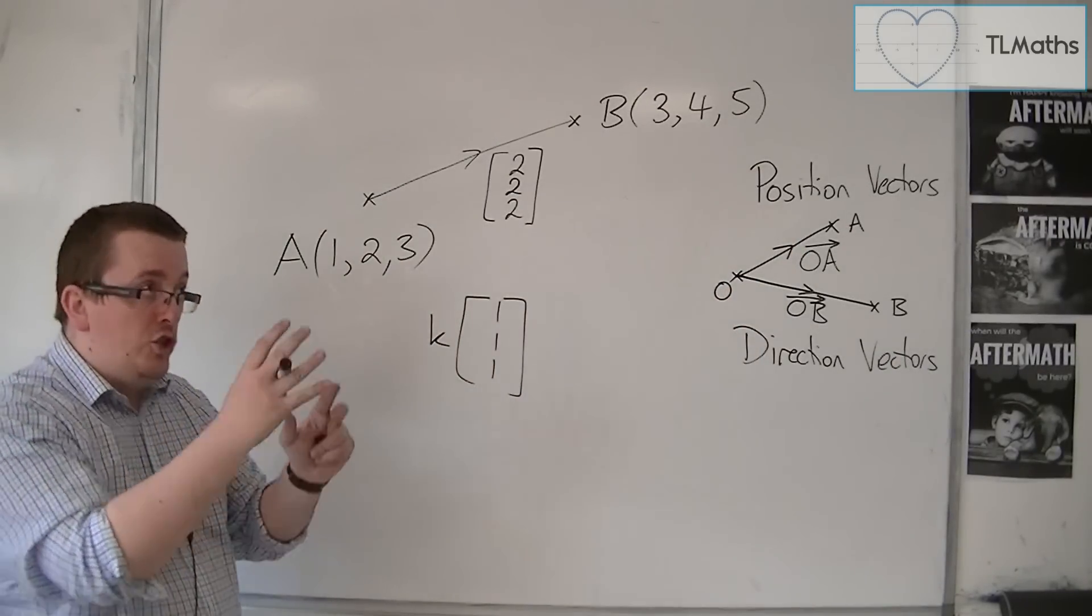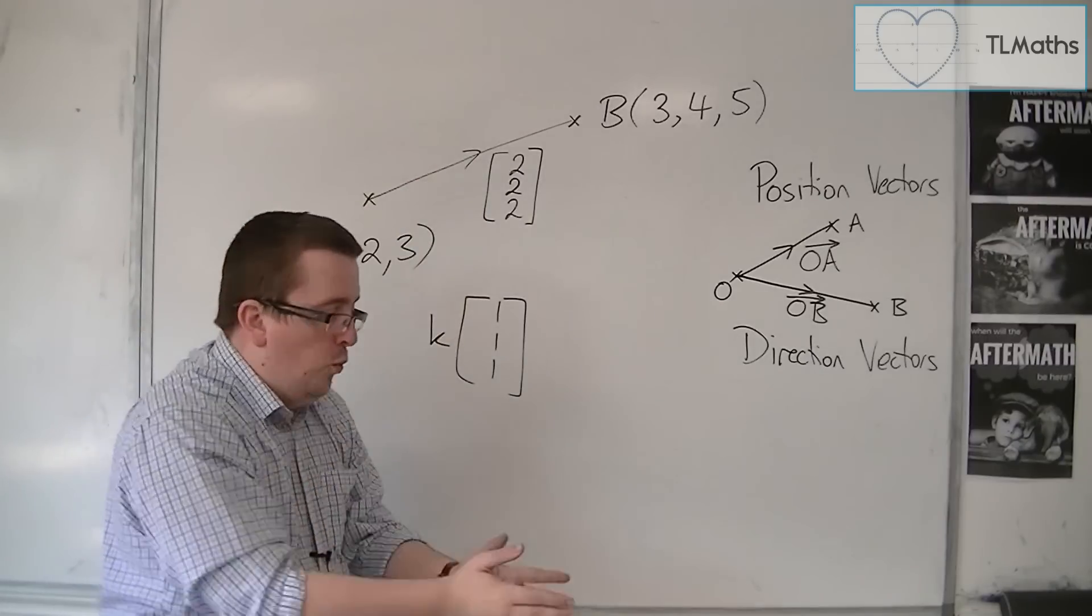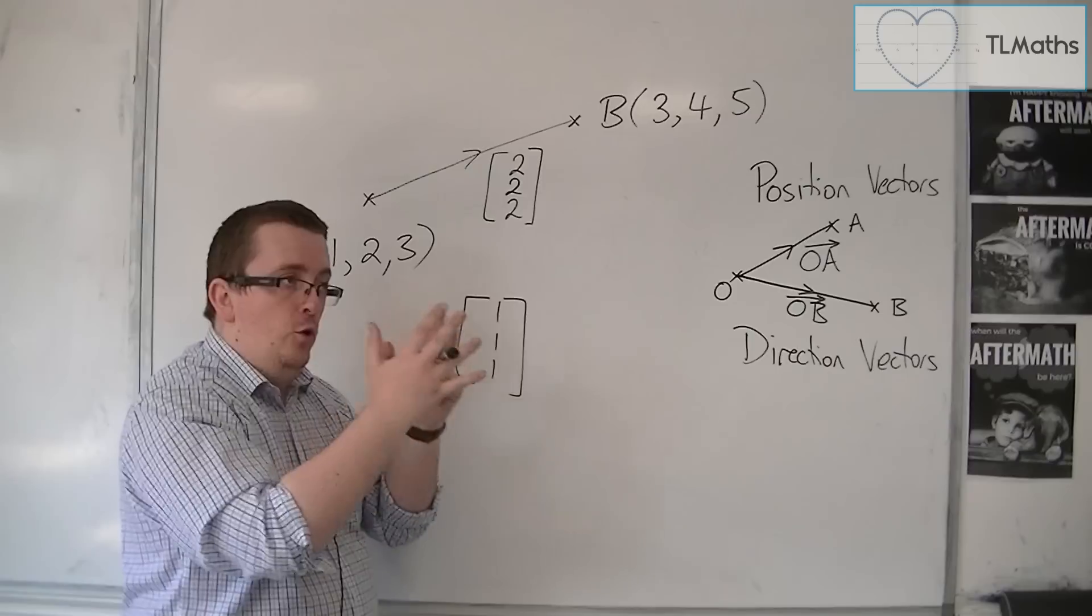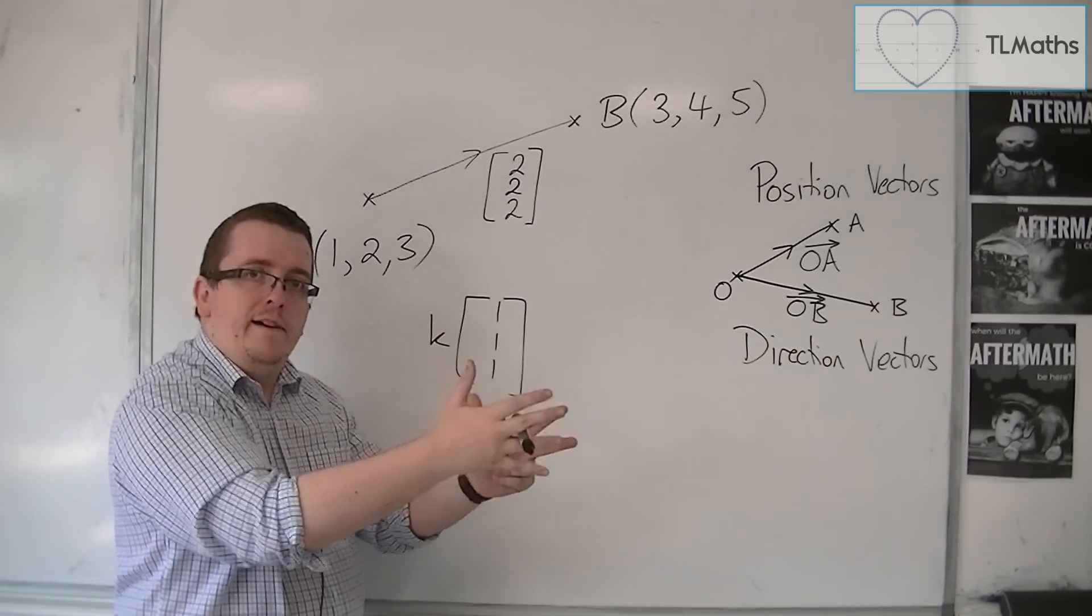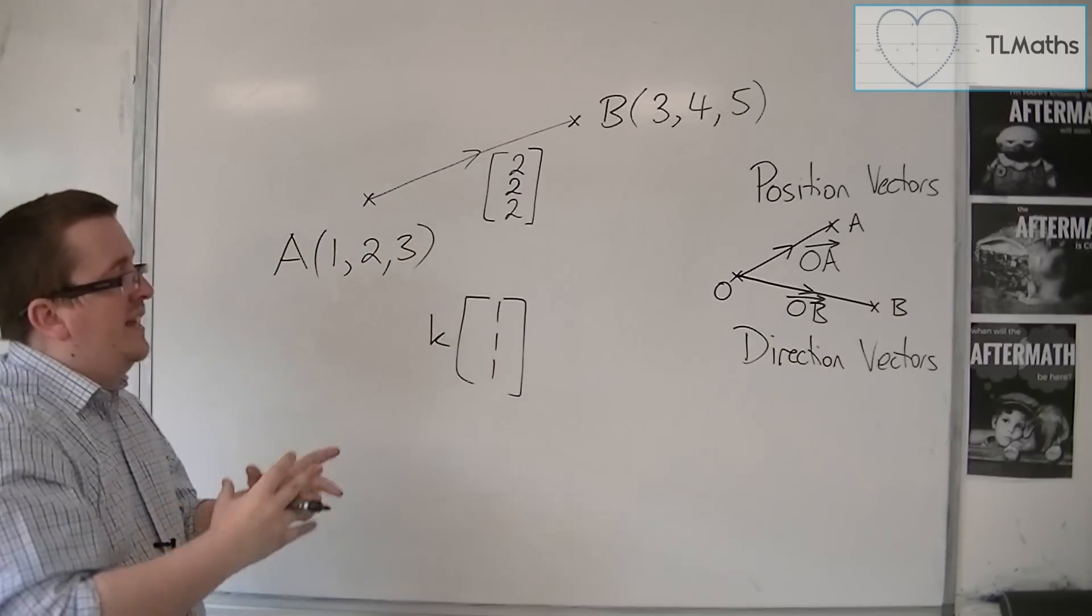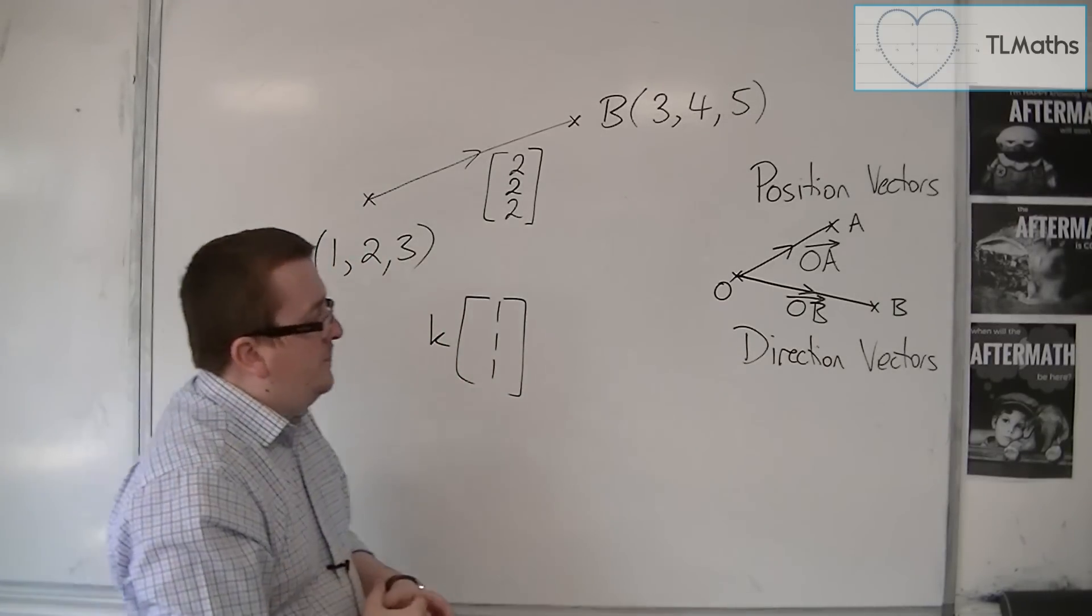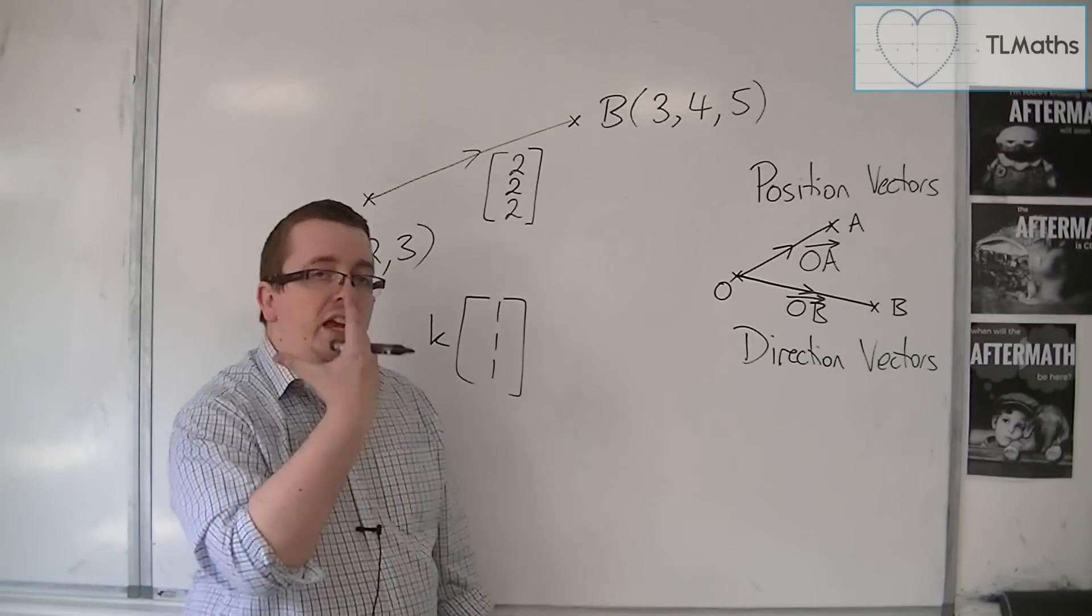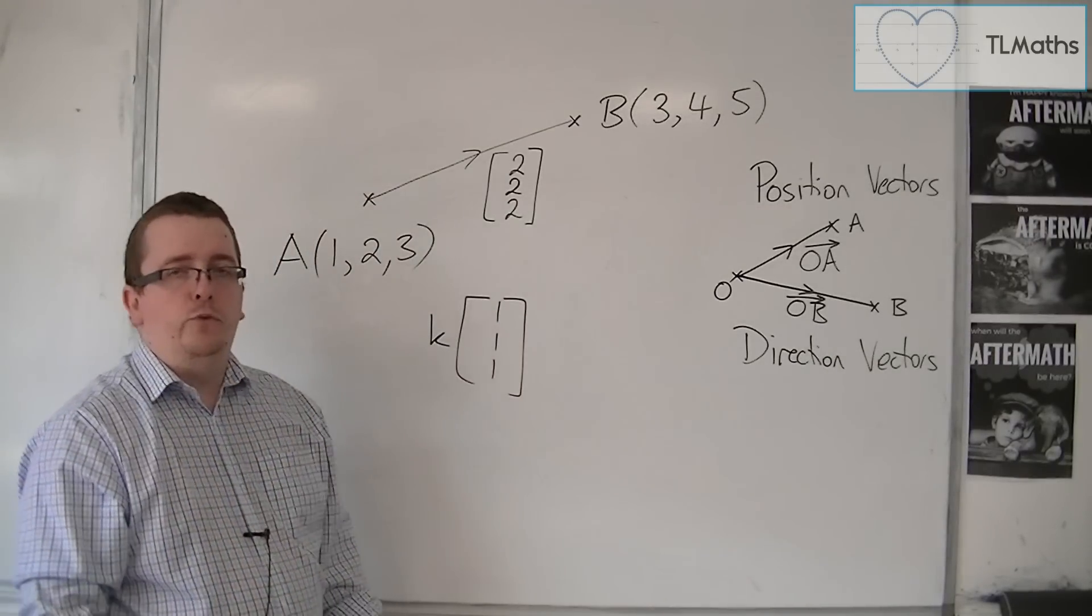The direction vector just tells you in which way to go, in which direction to point in order to go along the right line. So that's the key difference here. And we'll use more on this when we come to the equation of a line in three dimensions.